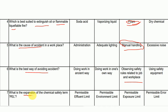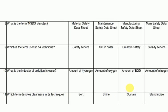What is the expansion of the chemical safety term? The term is Material Safety Data Sheet (MSDS) or Chemical Safety Data Sheet. Which term is used in 5S techniques for 'set in order'? The answer is 'set in order' — 5S techniques uses the term 'set in order'.